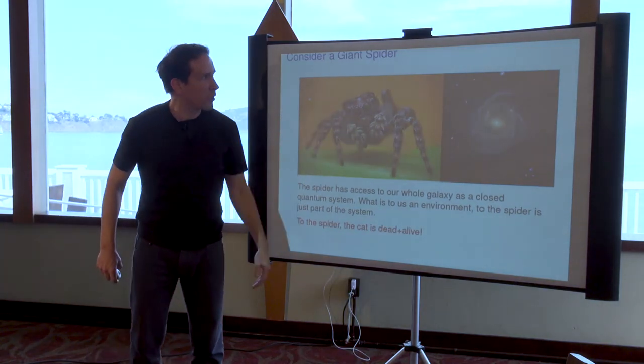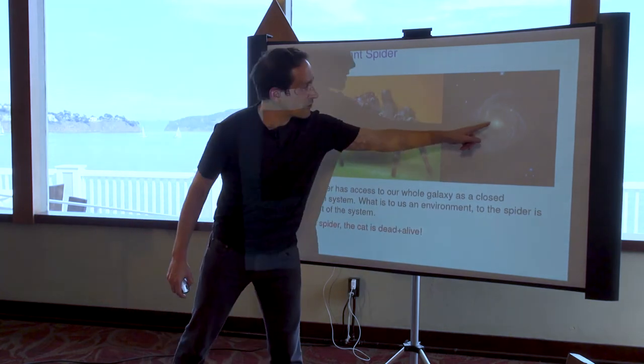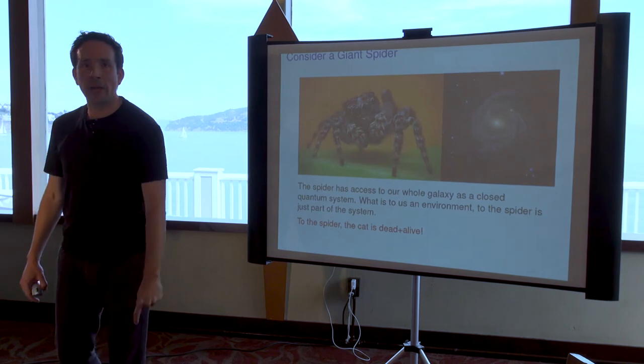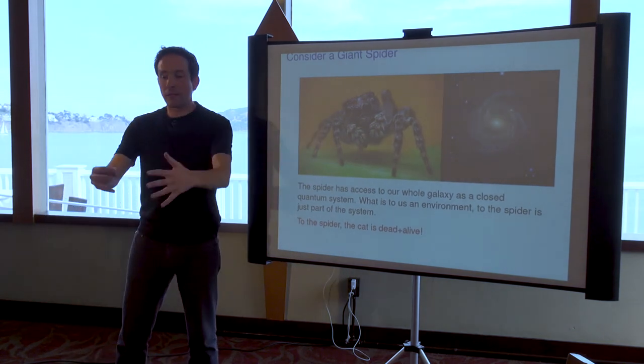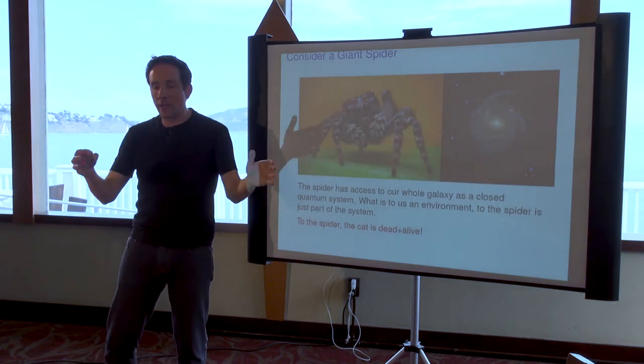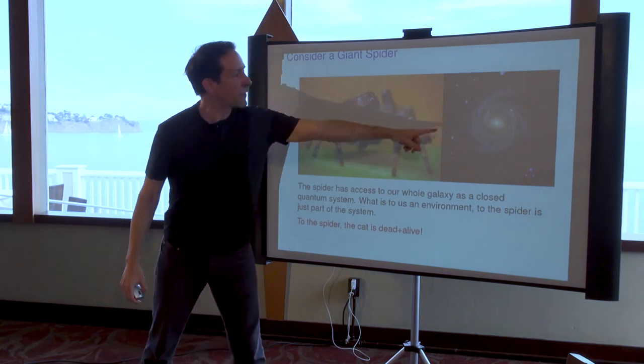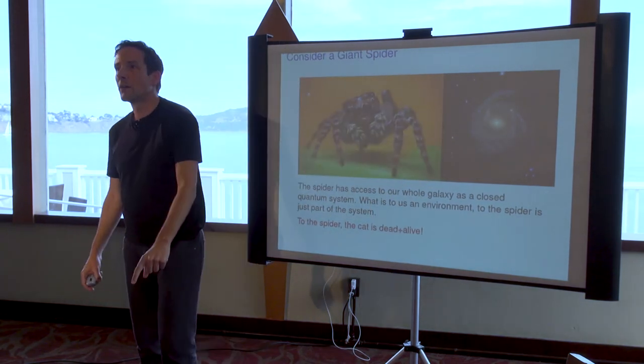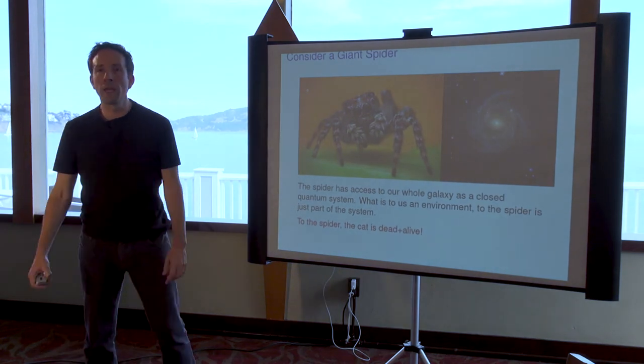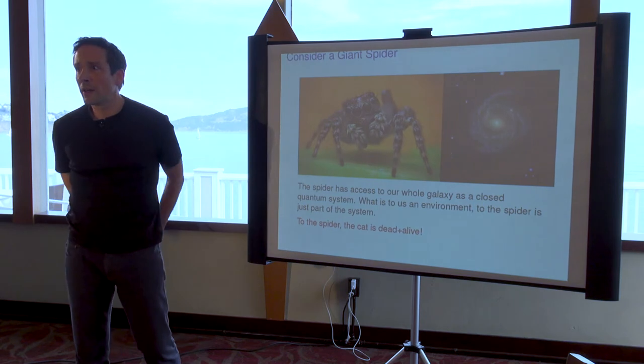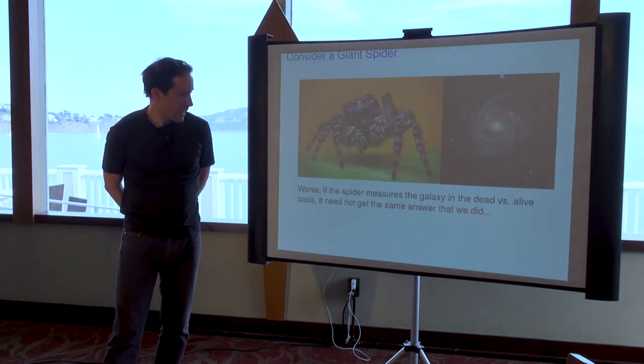And so to this spider, it takes 100,000 years for even light to travel from the center of the galaxy to the outside. So we may think that this cat has decohered, it's either dead or alive, because light particles bounced off of it. To the spider, all of that stuff is still in here. It's still very much part of the system. It hasn't interacted with anything that the spider would call an external environment.